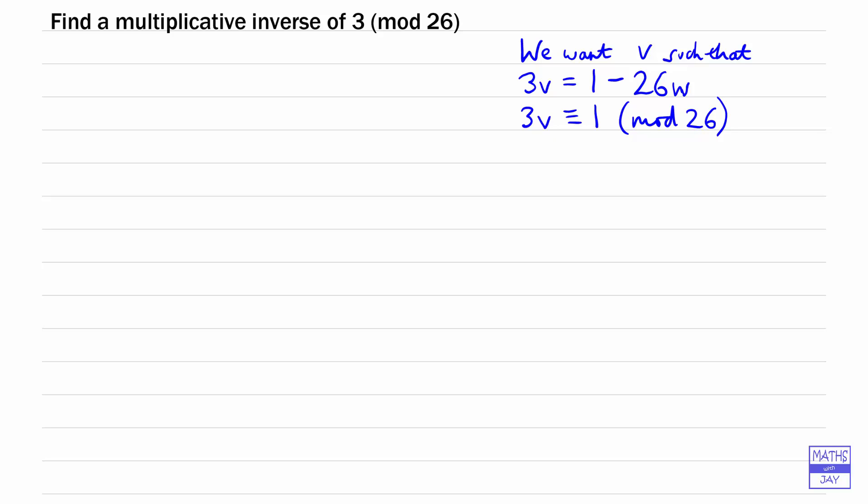We're trying to find the integer v so that when we multiply 3 by it, we get 1 in mod 26, which is the same as saying that 3 times v is equal to 1 plus or minus 26 times an integer w.